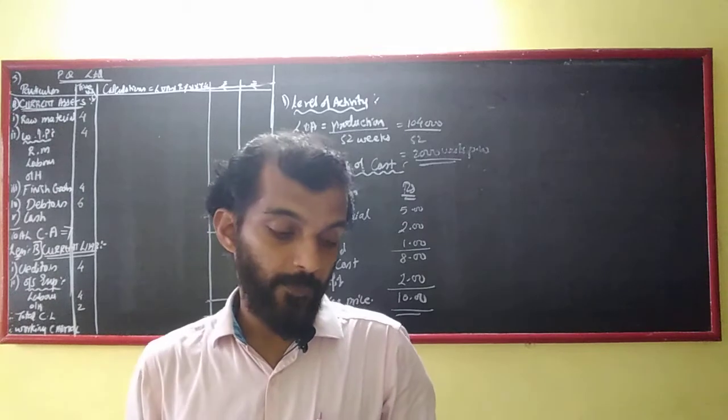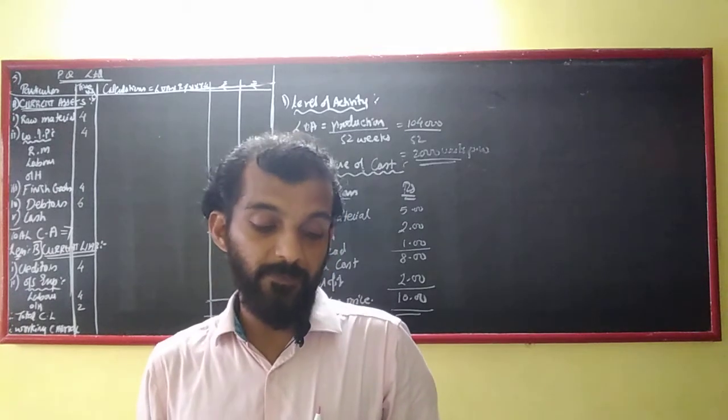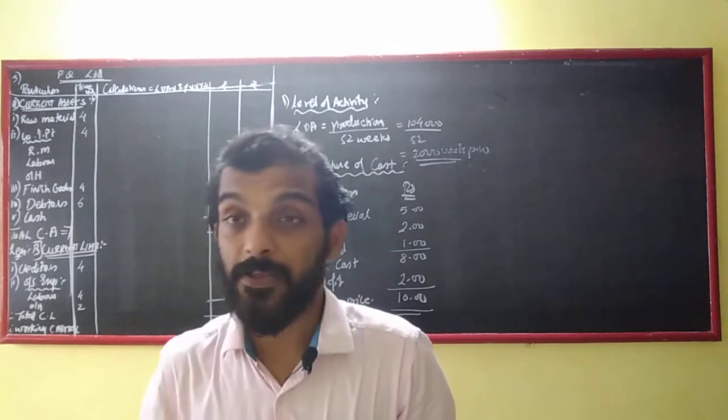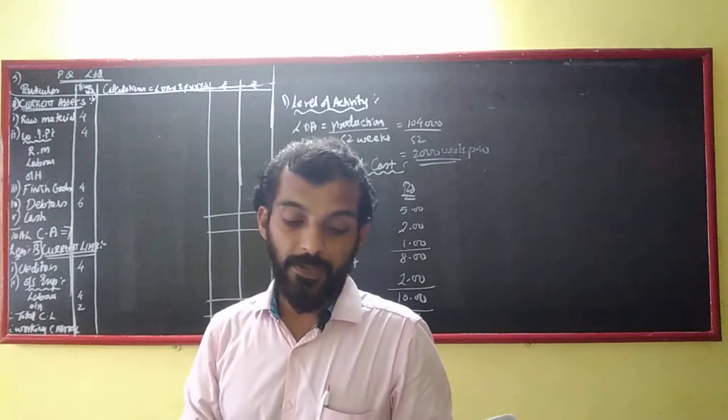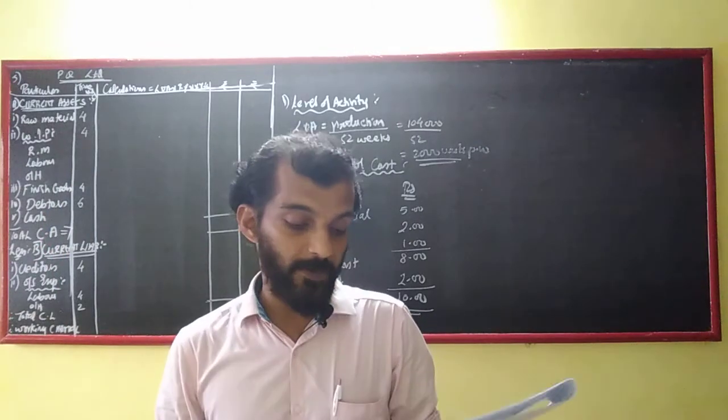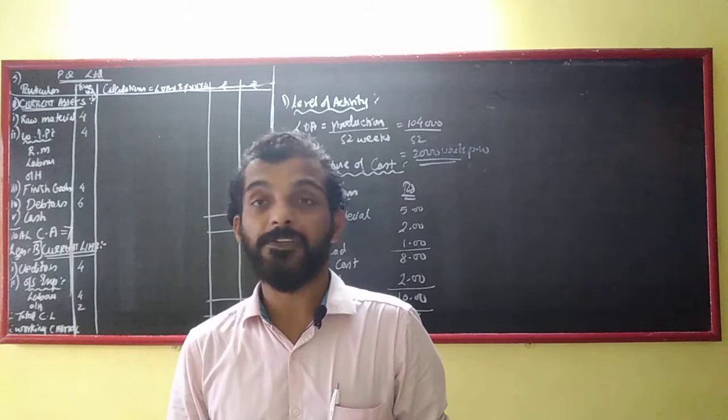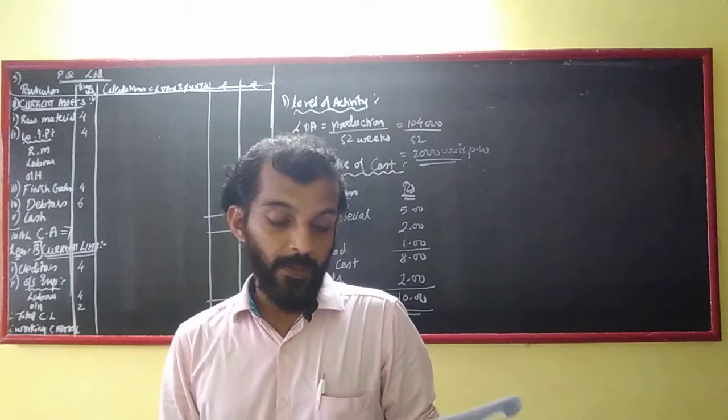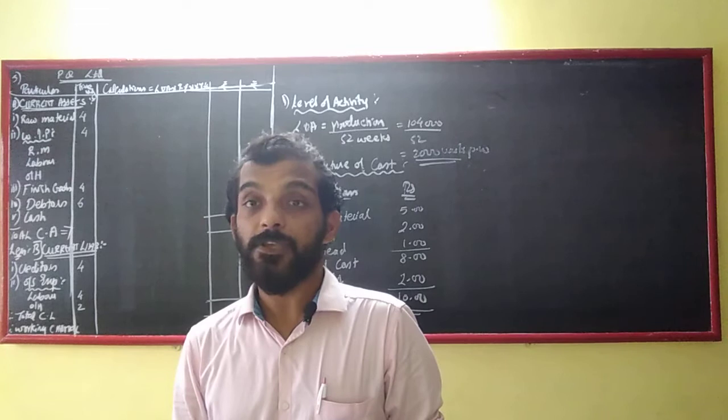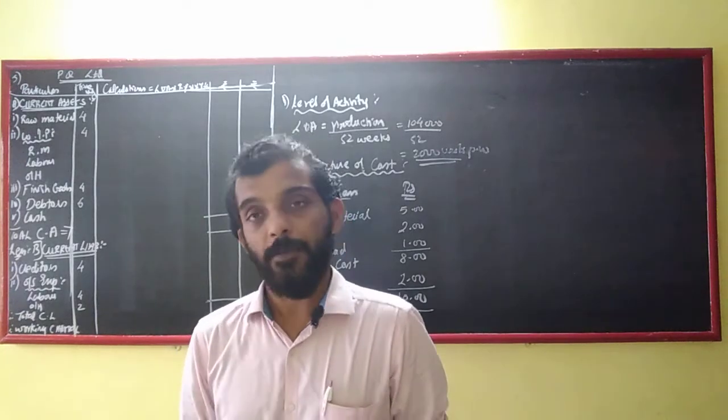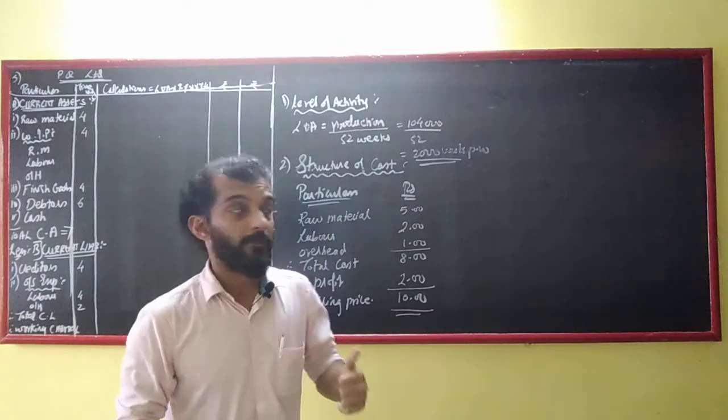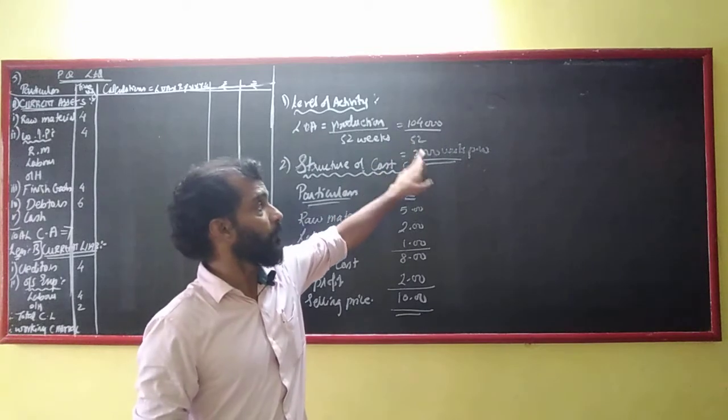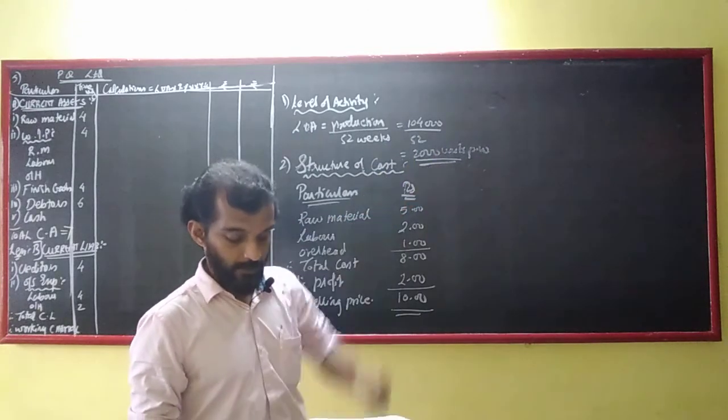Working capital question number 5. From the following information given by Messrs QN Company Private Limited, prepare an estimate of working capital for the year ended 31st March 2014. The estimated level of activity is 14,000 units for the year of 52 weeks, or 2,000 units per week.